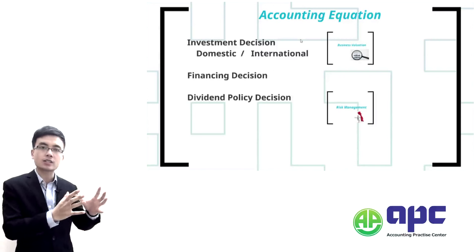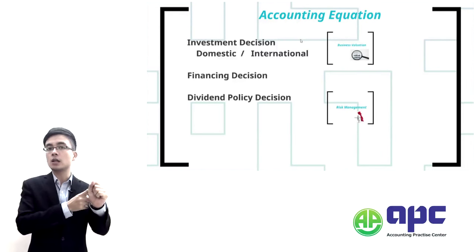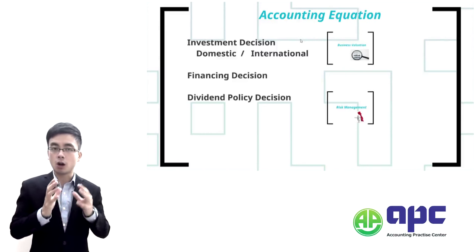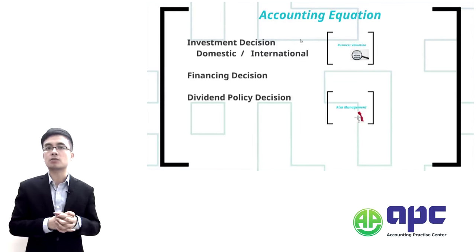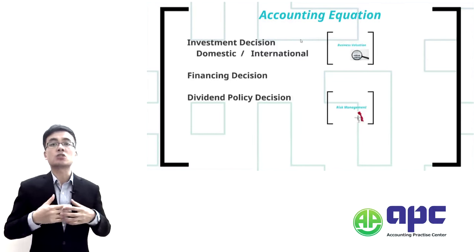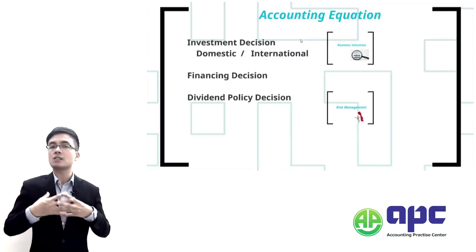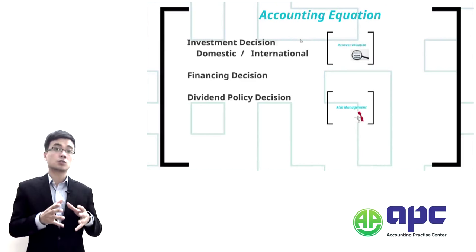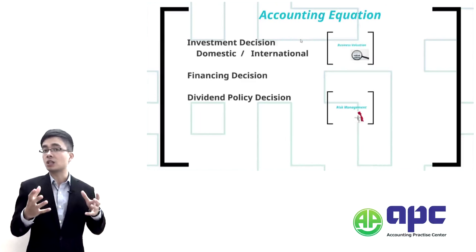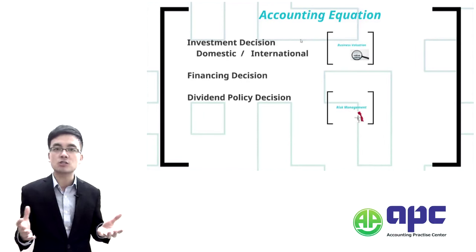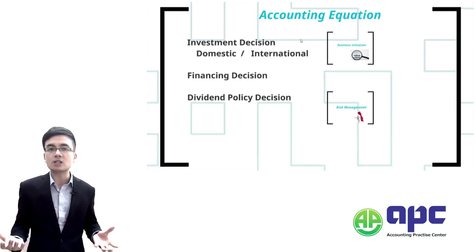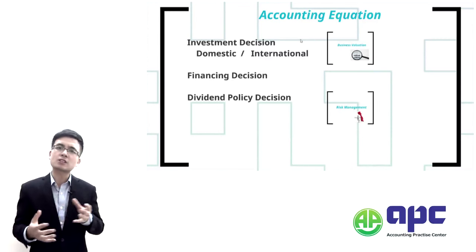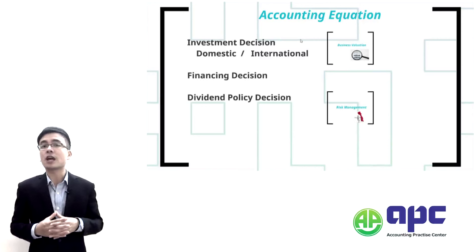Focusing on the asset side — the investment decision — in the P4 exam, we deal with domestic investment appraisal using NPV analysis, IRR (internal rate of return), accounting rate of return, and payback period — things covered in F9. We'll also cover advanced topics like asset replacement decisions, capital rationing, make-or-buy decisions, and lease-or-buy decisions from management accounting and F9.